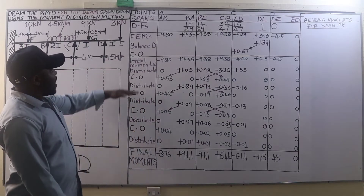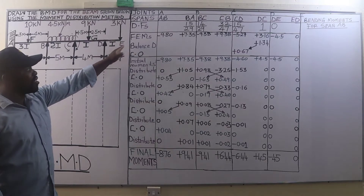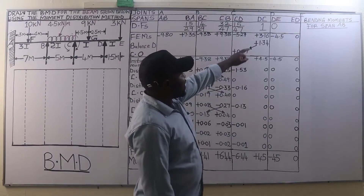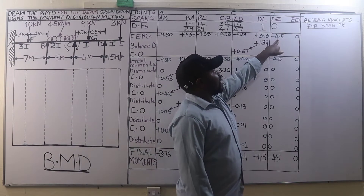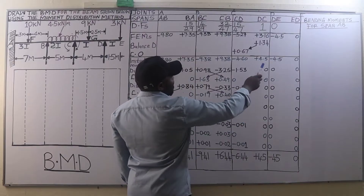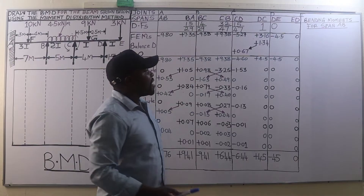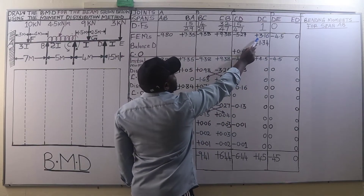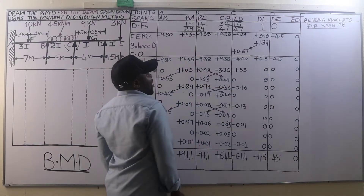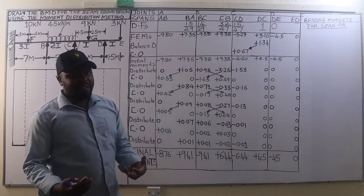After that we are going to balance joint D, since beyond D the member DE is overhanging, so we must balance D. We do that by determining the difference in the two moments — that is, we determine the excess moment. We find that the excess moment is positive 1.34, so we change signs: negative 3.16 plus 4.5 gives positive 1.34.